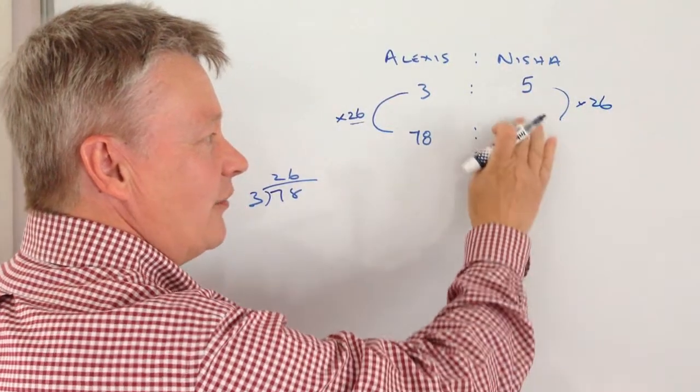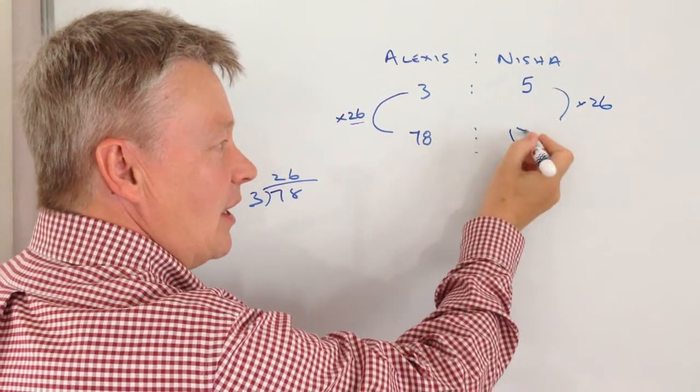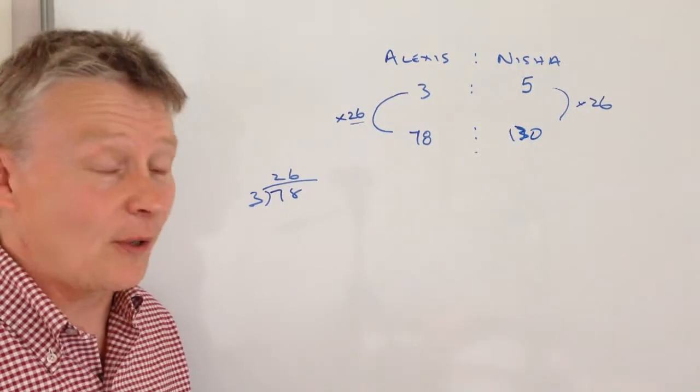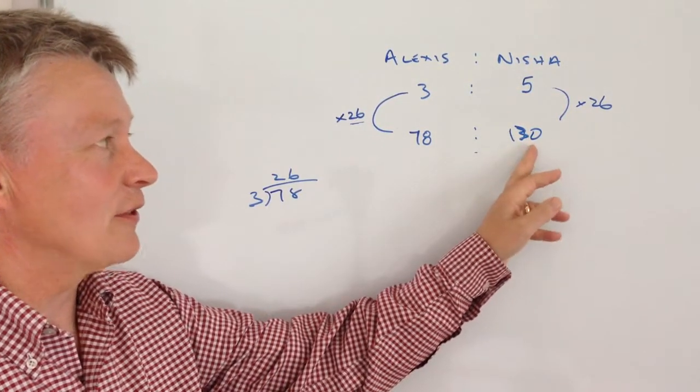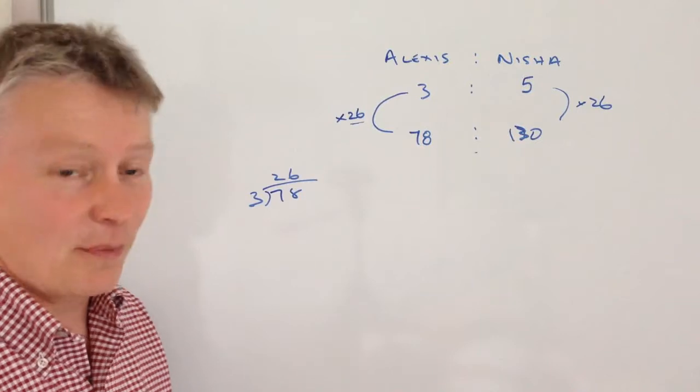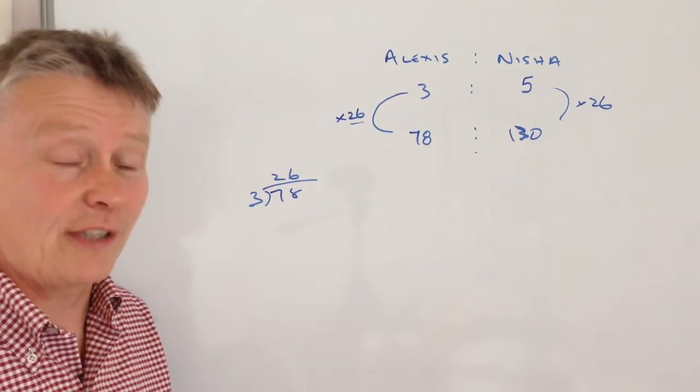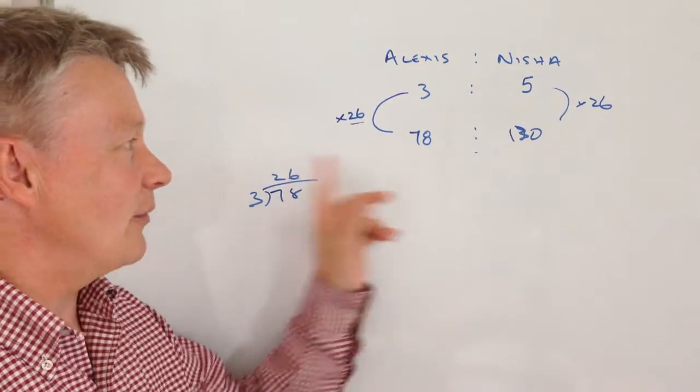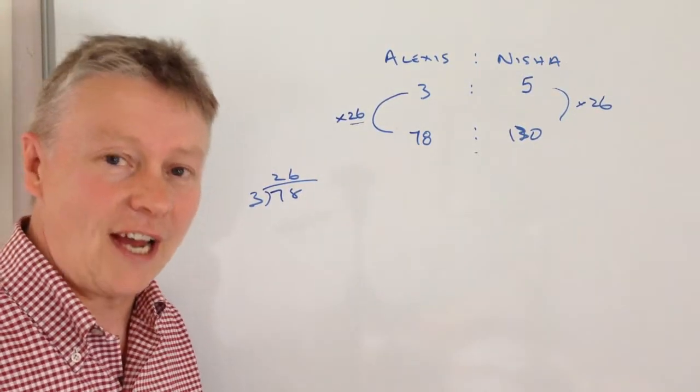And if you work that out, that's going to be £130. So in other words, with this type of question, Nisha is paying £130, Alexis is paying £78, providing they split the phone bill in the ratio of 3 to 5.